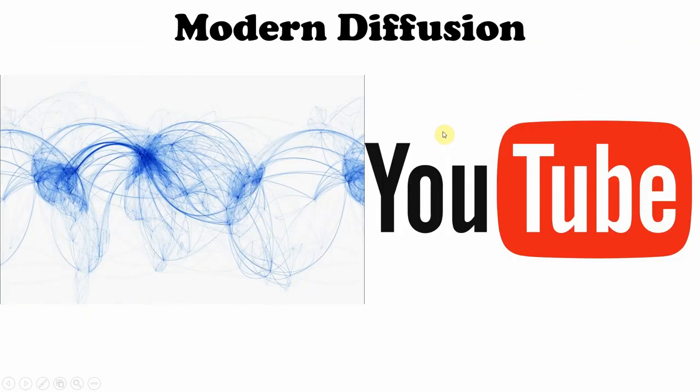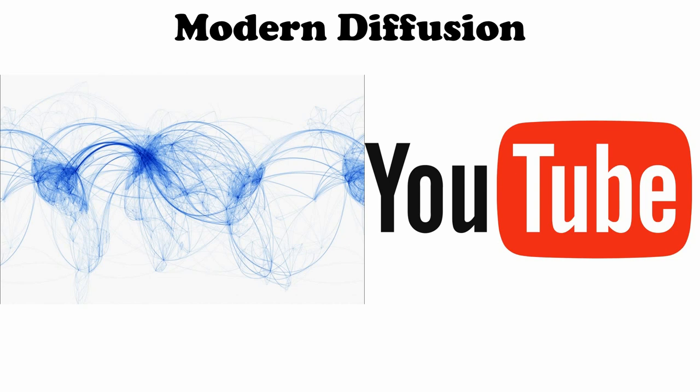Modern day diffusion is a little different. This is an airline map of every flight in the world going from origin to destination. A lot of places are connected globally — globalization is alive. YouTube: without this medium, many ideas and fads and phenomena would not be able to diffuse.